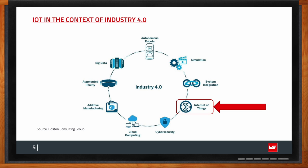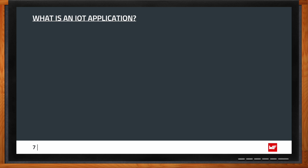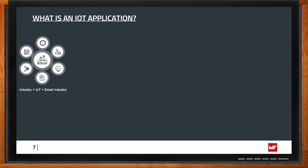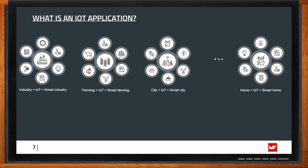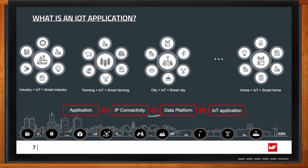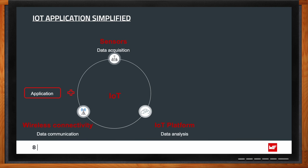IoT is often used to mean a lot of different things, so let's set up the context. Consider some of the most popular IoT applications — industrial applications, farming, smart city, smart home, and so on. What IoT typically means is providing 'smartness' to any application. Adding IoT to any application results in a smart application — smart farming, smart industry, smart city, smart home.